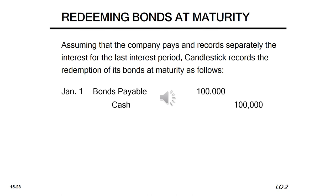What happens when the company redeems its bonds? At maturity, assuming interest for the last period has been recorded separately, Candlestick records the redemption simply by reversing the original issuance entry: debit bonds payable $100,000 and credit cash $100,000, since the company is paying out the full face value to the bondholders.